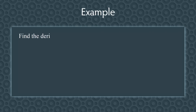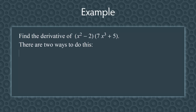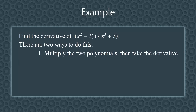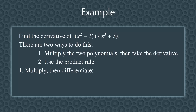Let's see an example. Let's find the derivative of (x² − 2)(7x³ + 5). There are two ways to do this: one, we can multiply the two polynomials and then take the derivative; or two, we can use the product rule. We'll use both ways. First, let's multiply the two polynomials and then take the derivative, so we'll know what the answer should be.